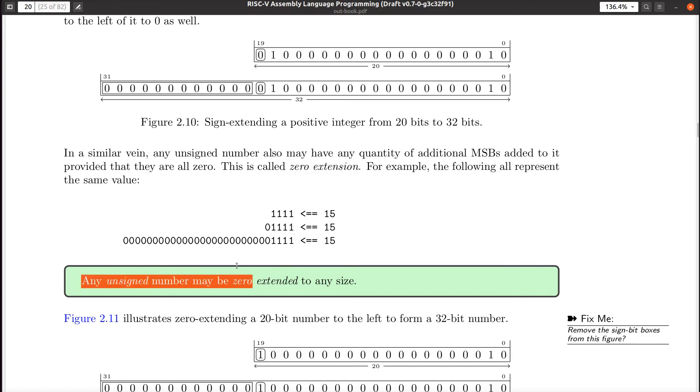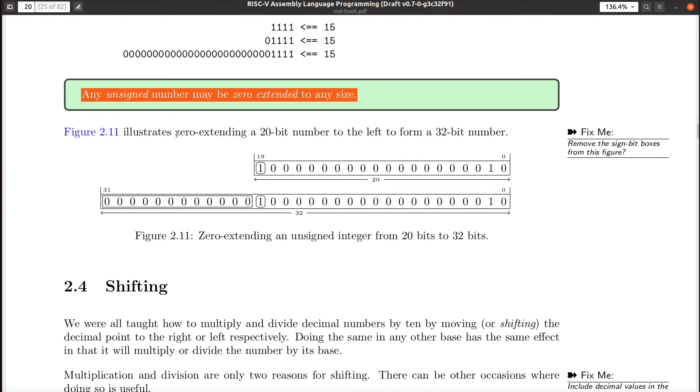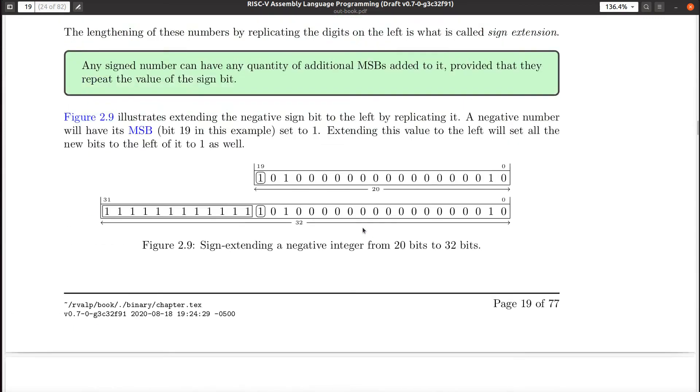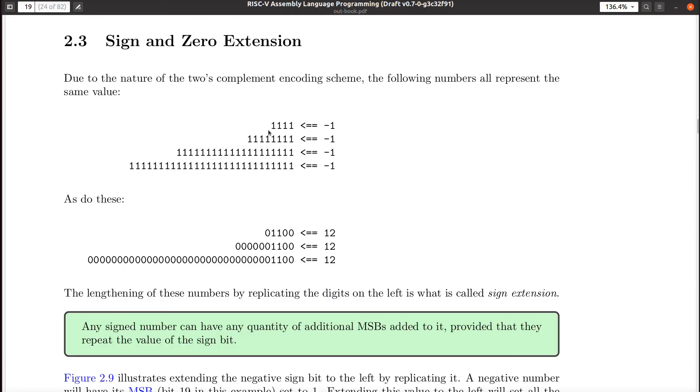So any unsigned number may be zero extended to any size. And again, here's some more diagrams of what it looks like. And a little note to myself, remove the signed bit boxes. Yeah, I got to get around to fixing these pictures someday. So you do not replicate this bit when you're dealing with an unsigned number. You can clearly see in this example, the original value stays here and any additional bits are zeros. That works the same way in decimal as well. This should be intuitive. What's new, perhaps, is this idea that you would use sign extension, this replicating of the signed bit.